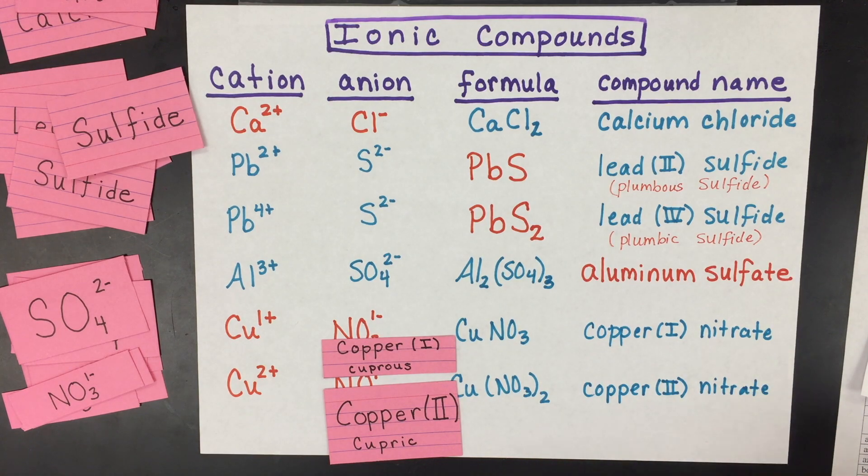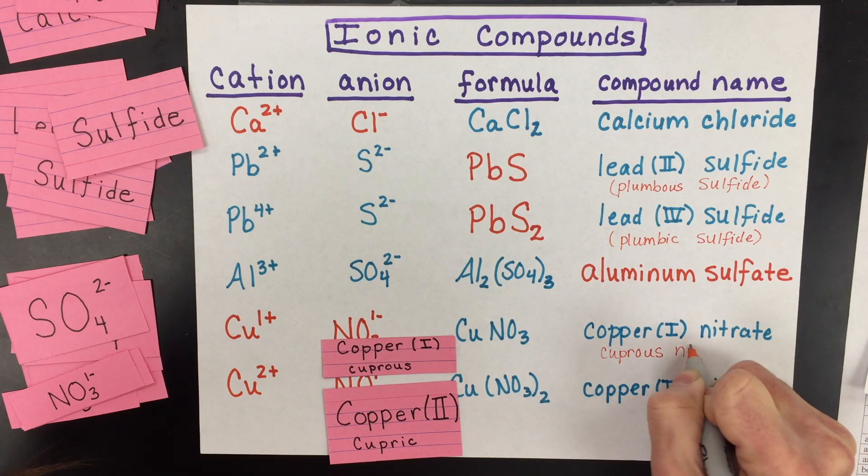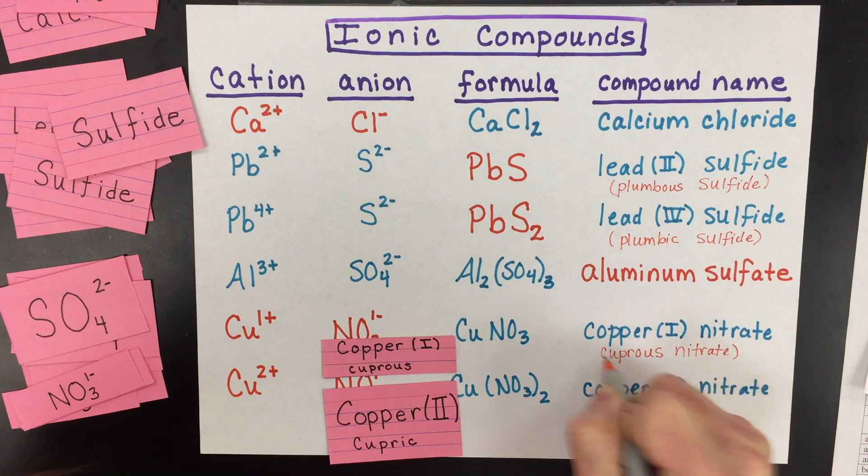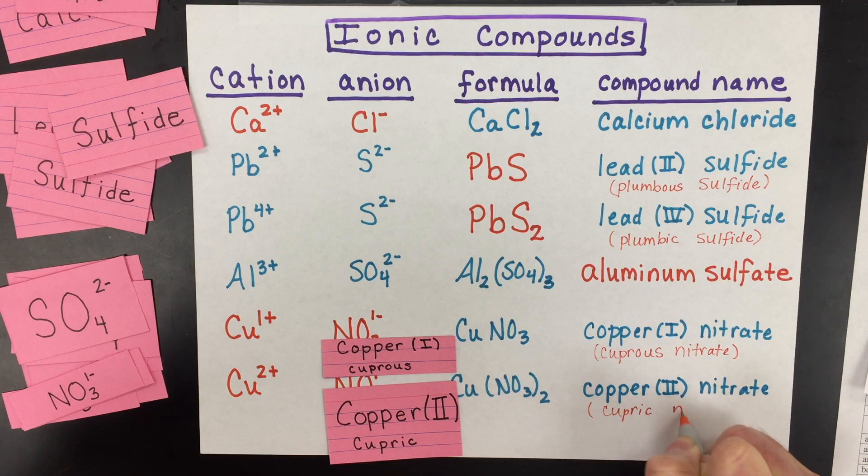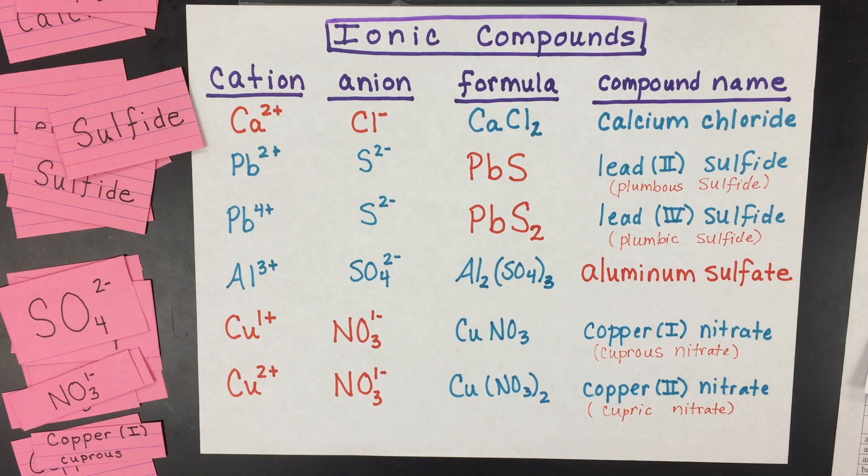Again, if you'd like to use what are called the Latin naming, copper was from cuprous, which is the lower charge. So there's an alternative answer for this, or cupric nitrate would be the higher charge of copper, which is the two plus. And that's how you name and write ionic compounds.